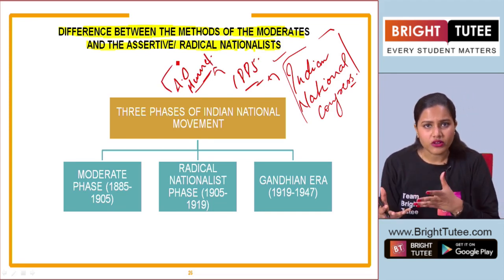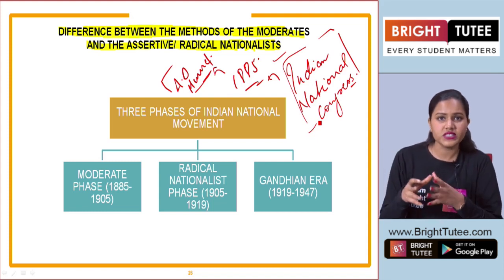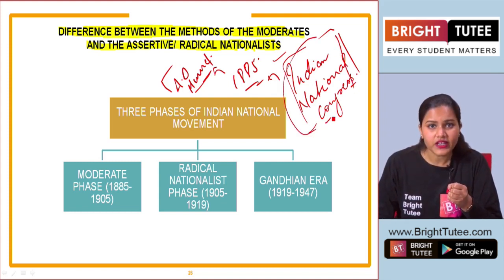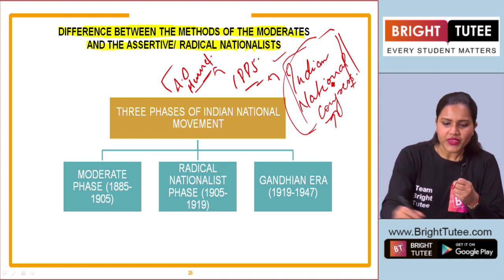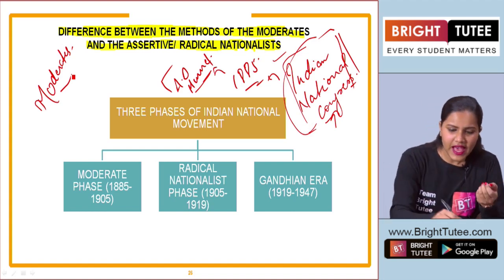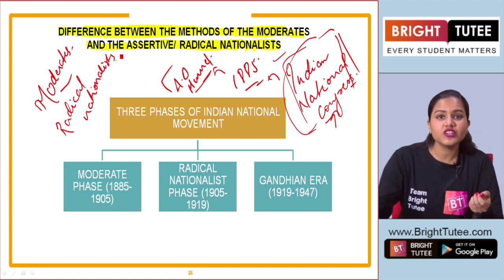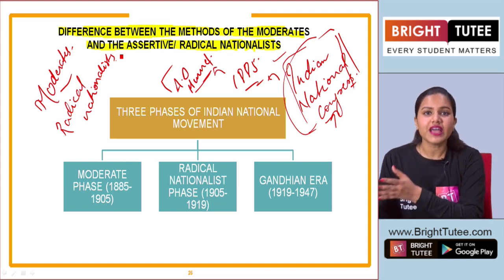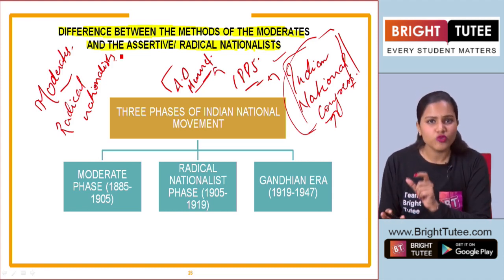When we talk about the Indian National Congress, we have learned many points. Various leaders were involved in this Congress and sessions used to take place time and again at various places. People from different regions represented themselves in the Indian National Congress. Now we are talking about the Indian National Movement - how did it emerge and how did it happen in phases?